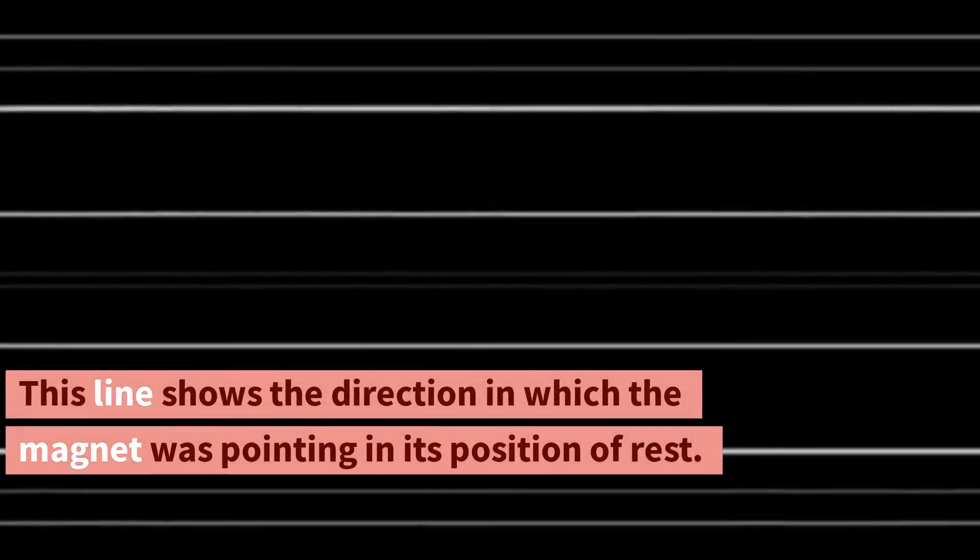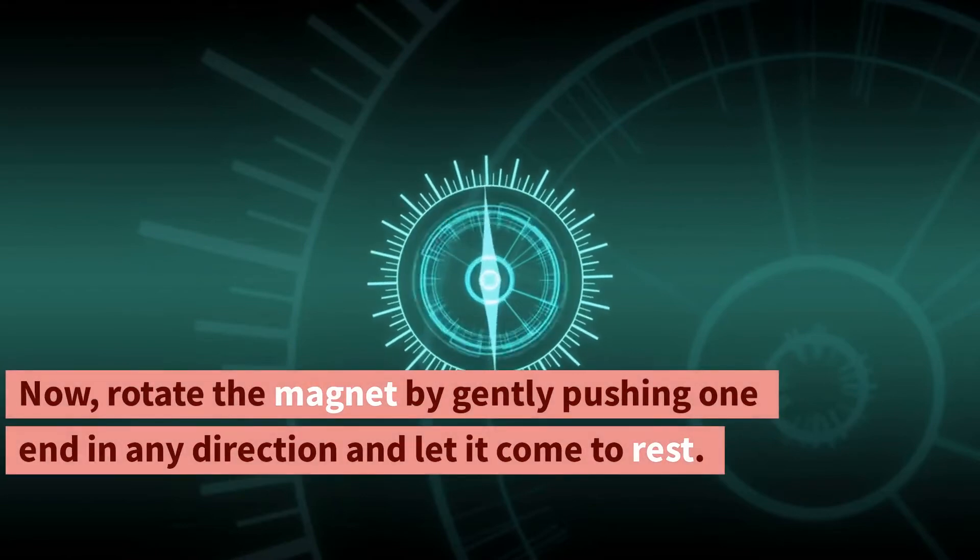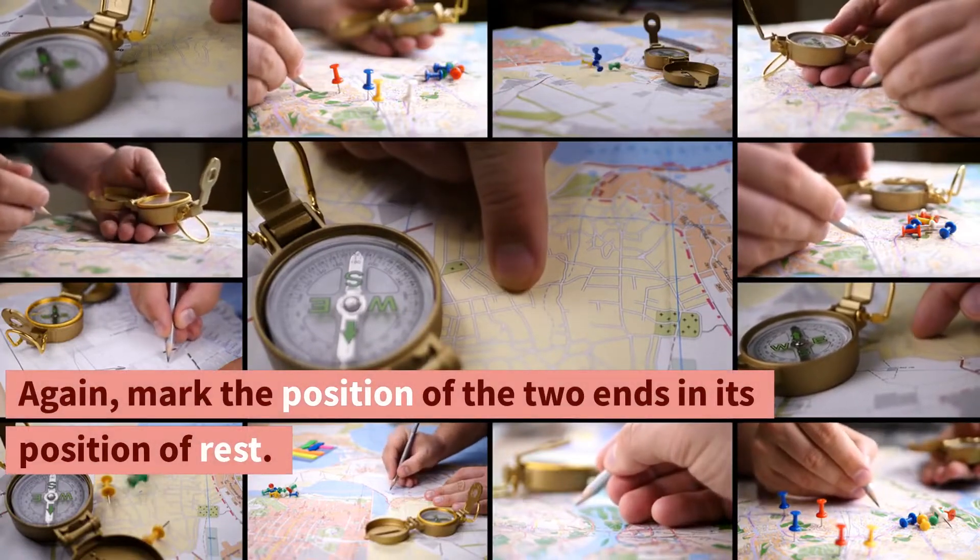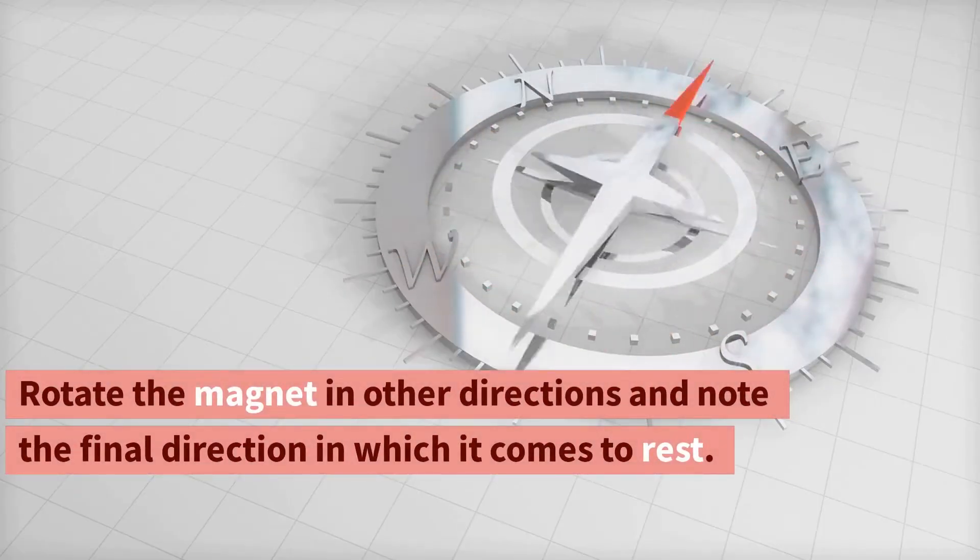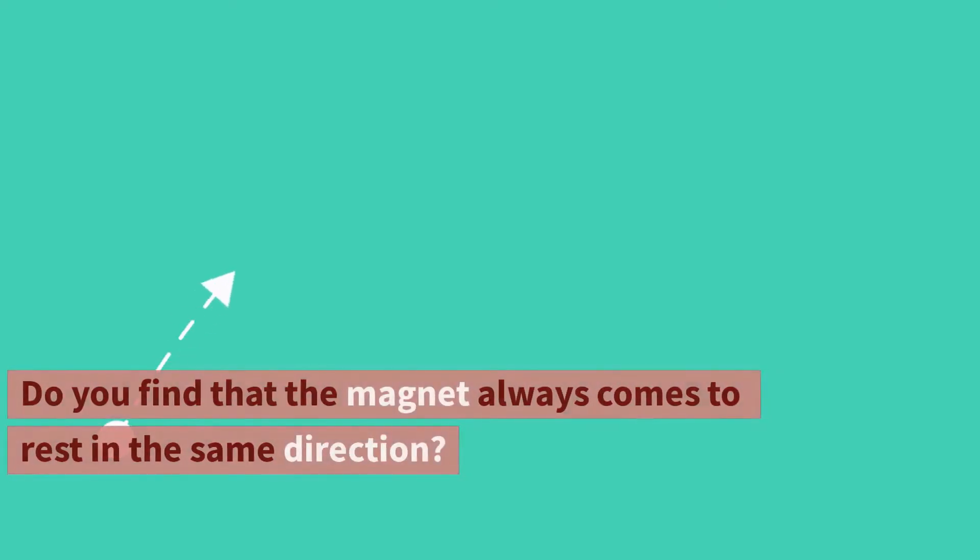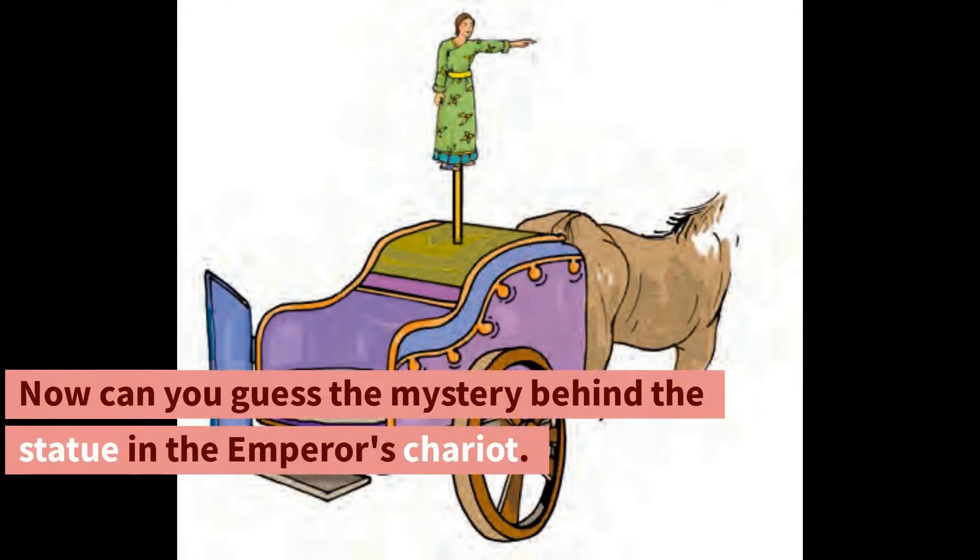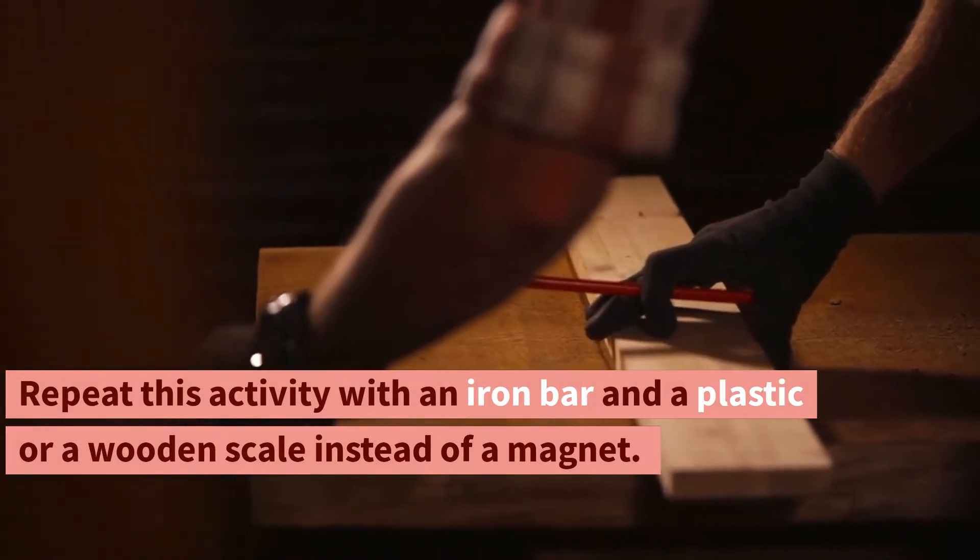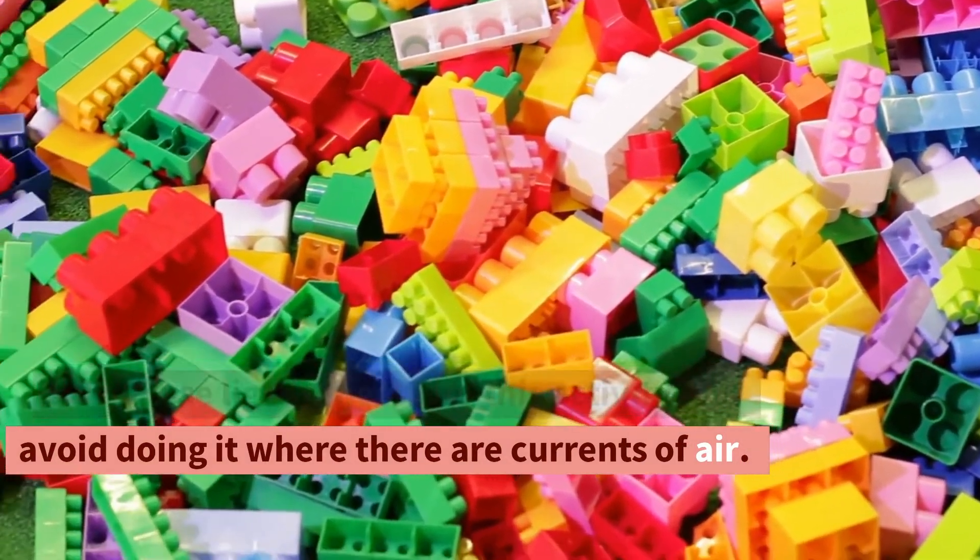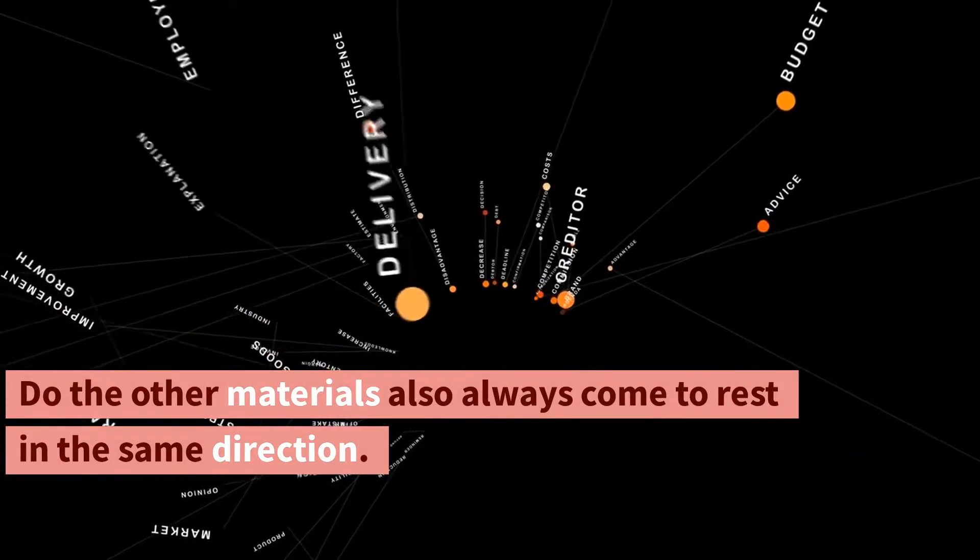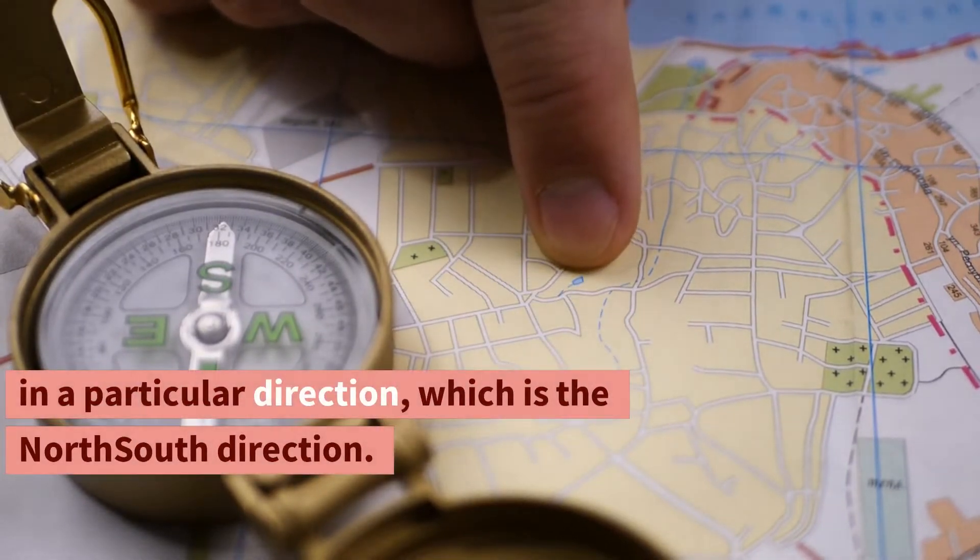This line shows the direction in which the magnet was pointing in its position of rest. Now rotate the magnet by gently pushing one end in any direction and let it come to rest. Again, mark the position of the two ends in its position of rest. Does the magnet now point in a different direction? Rotate the magnet in other directions and note the final direction in which it comes to rest. Do you find that the magnet always comes to rest in the same direction? Now can you guess the mystery behind the statue in the emperor's chariot? Repeat this activity with an iron bar and a plastic or a wooden scale instead of a magnet. Do not use light objects for this activity and avoid doing it where there are currents of air. Do the other materials also always come to rest in the same direction? We find that a freely suspended bar magnet always comes to rest in a particular direction, which is the north-south direction.